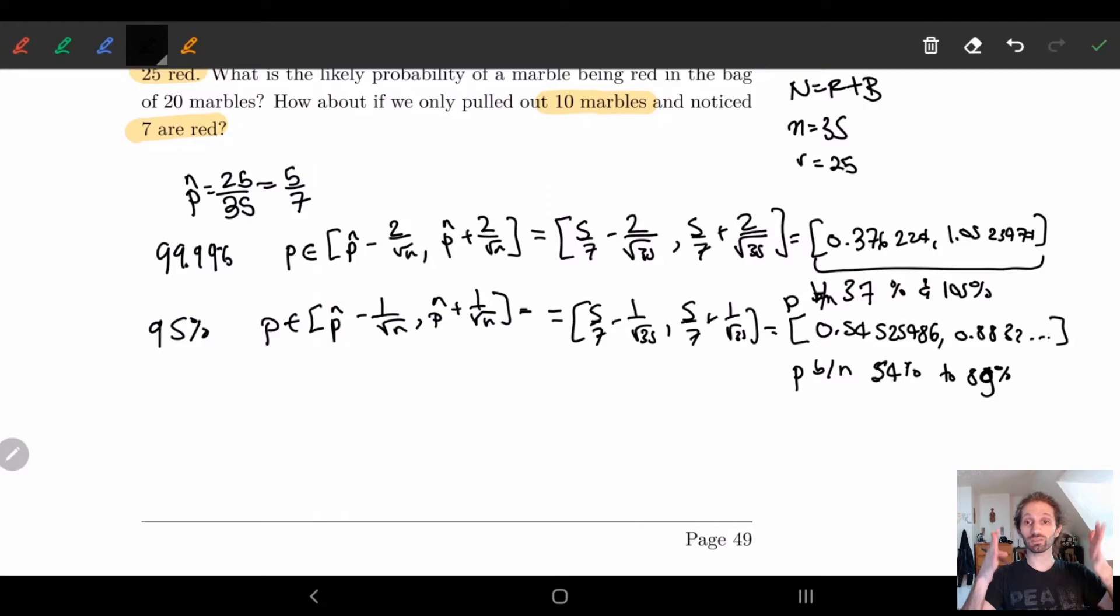So 95% of the time our probability is going to be between 54% and 89%. This is a much more strict bound. At least it's no longer 105%. We can't have more red marbles than actual marbles.